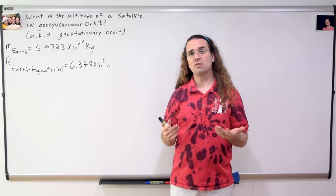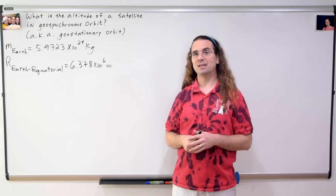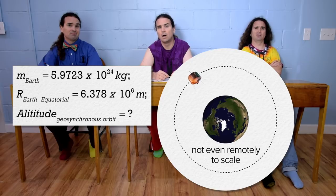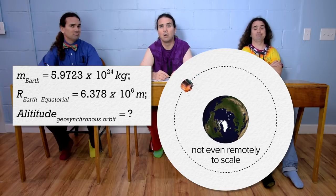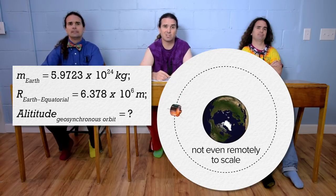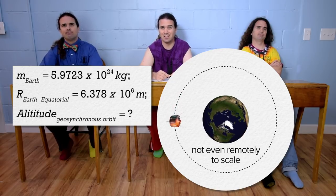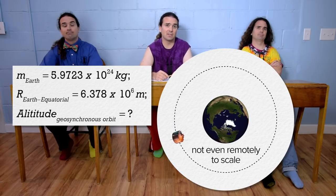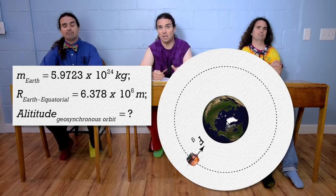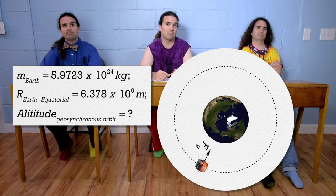Bobby, how should we start solving for the altitude of a satellite in geostationary orbit? All our knowns are in base SI units, so we don't need to convert anything. Draw a picture — there you go, I drew you a picture. We need to draw a free body diagram of the forces acting on the satellite. The only force acting on the satellite is the force of gravity caused by the Earth on the satellite, and it is pointed toward the center of mass of the Earth.